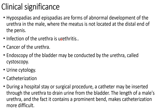The second condition is urethritis — that is, infection of the urethra. Third is cancer of the urethra. There are also procedures done through the urethra: cystoscopy, which is endoscopic study of the bladder done through the urethra; urine cytology, which is the examination of urine specimens for abnormal cellular characteristics; and urinary catheterization, where a catheter is inserted into the bladder through the urethra to drain it. Male catheterization is more difficult compared to female catheterization because of the two bends seen in the male urethra.